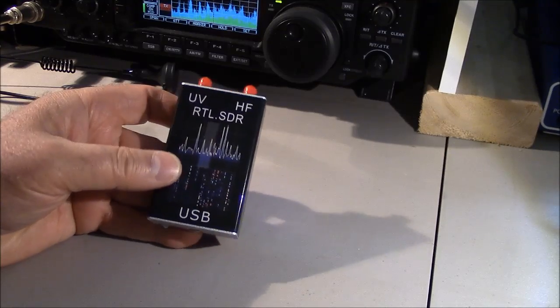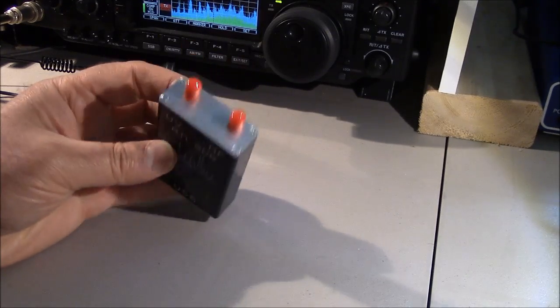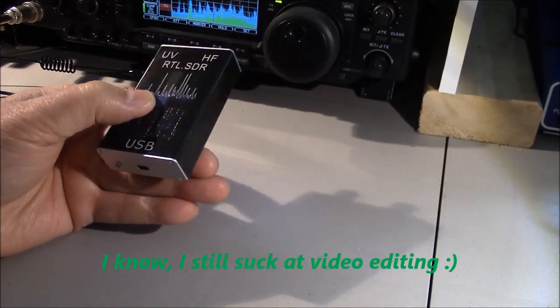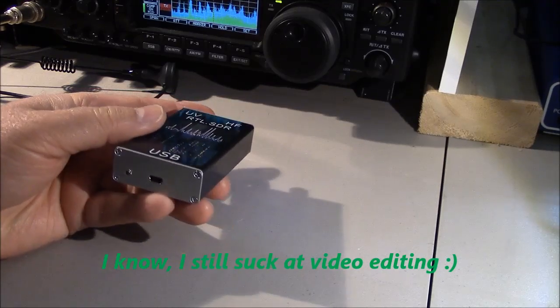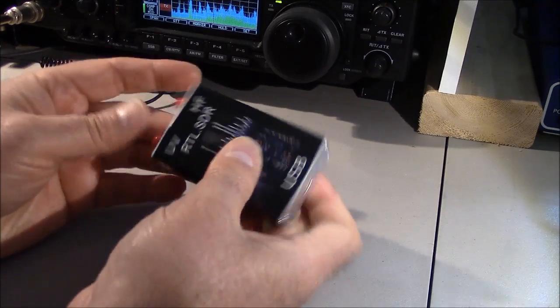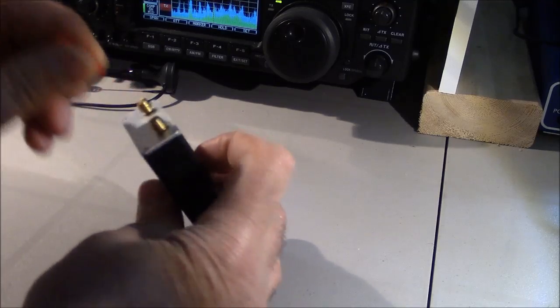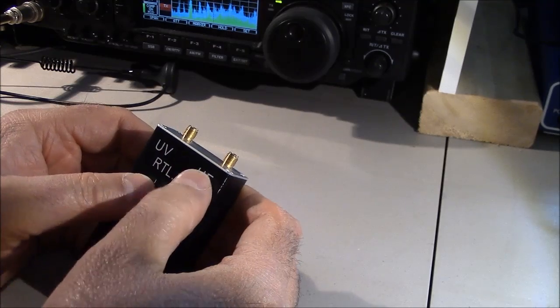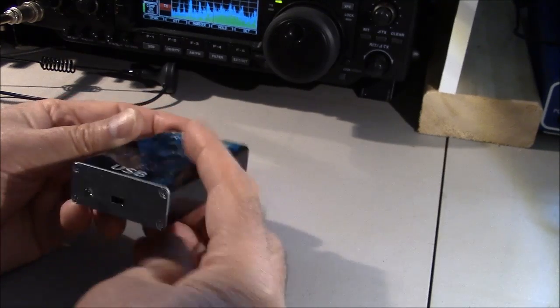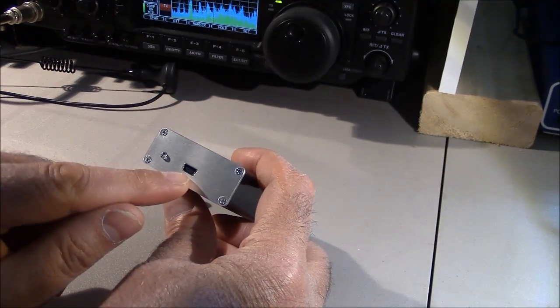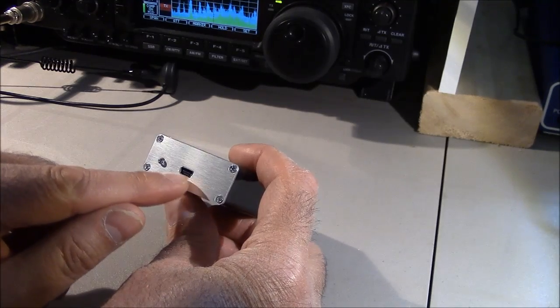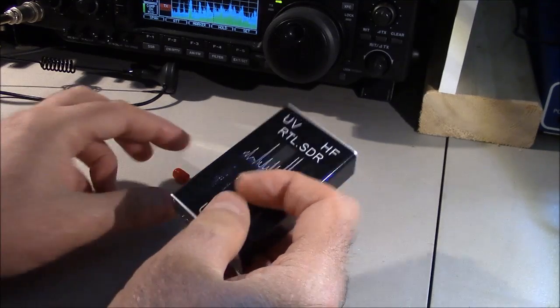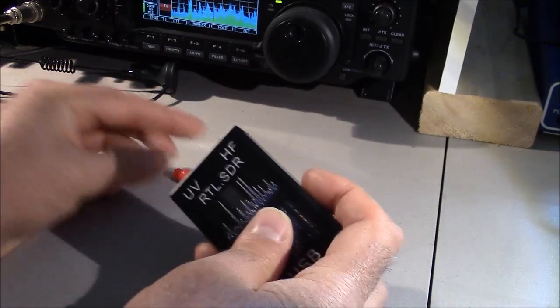So this one came from radiooddity.com and I ordered it online for forty-three dollars. It has two separate inputs, SMC inputs, for either UHF VHF and a separate one for HF. There's a standard USB port there for both the computer interface and that powers this unit, and there's a light that comes on when it's operating.